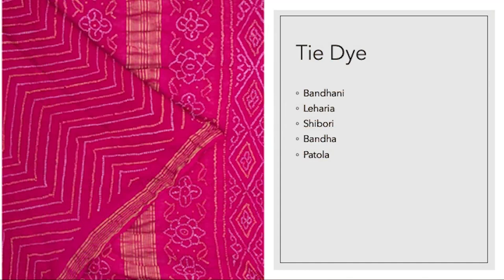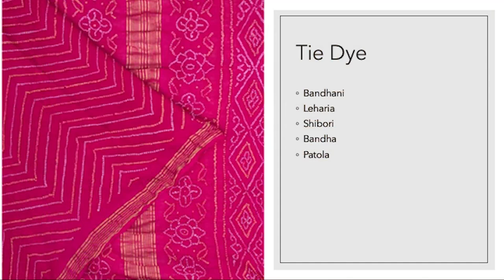Other techniques used to make sarees include tie-dye. Bandhani is a tie-dye technique where you gather a tiny piece of fabric, tie a thread around it, and then dye it — it creates these little white circles where the piece was tied. There is also lahiriya, where instead of creating circles you create lines on the fabric.